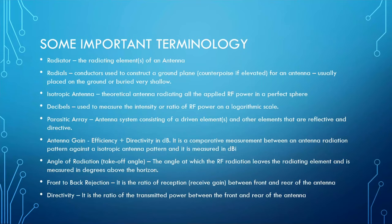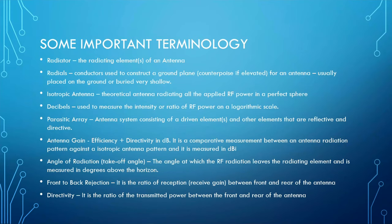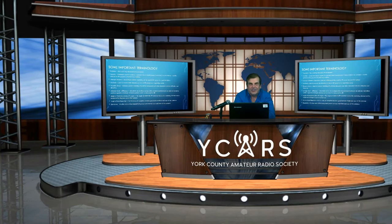Some important terminology: a radiator is the radiating element; radials are the counterpoise or ground conductivity part of an antenna. An isotropic antenna is a perfect radiator in space with no loss — it radiates an omnidirectional spherical pattern with perfect unity gain. When you hear dBi, that means gain compared to an isotropic antenna. Callum uses the term 'bananas' — saying something has five bananas more gain than a vertical is just a way to measure one antenna against another.